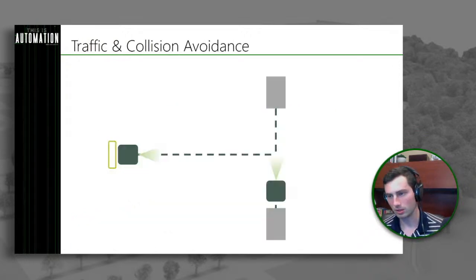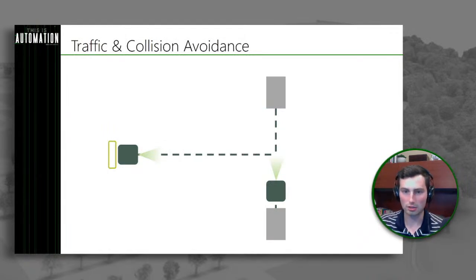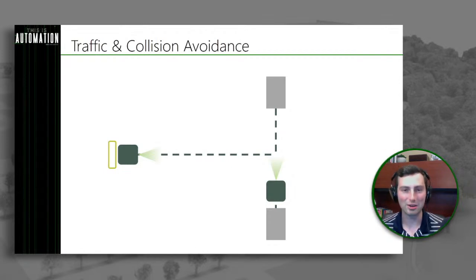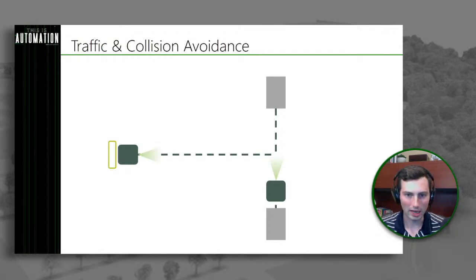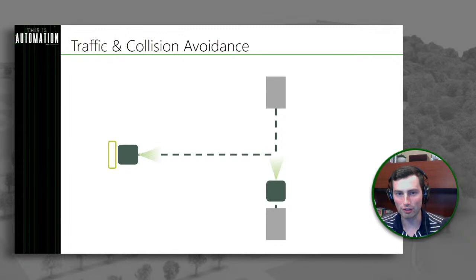Moving on to traffic and collision avoidance: with just one AGV going from point A to point B, there's no problem. But as soon as you add one more AGV or AMR, you need to manage traffic and ensure they don't collide with each other.